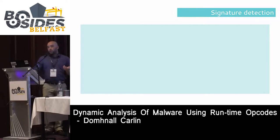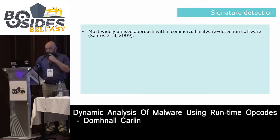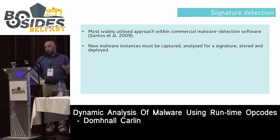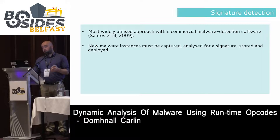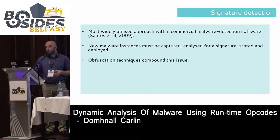The context of my PhD is new ways to detect malware. Signature detection is the most widely used approach in commercial malware detection. New malware instances must be captured, analyzed for a signature, stored, and then deployed — so by definition you're behind the curve. You have to capture a new sample, analyze it manually for a signature, then deploy it to all your users. Obfuscation techniques compound this issue.